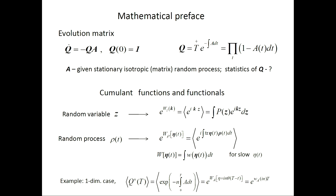In the case that we deal with random processes, we should consider cumulant functionals instead of functions. But if this probe function — the argument of W — changes slowly compared to the correlation time of the process, then the functional can be reduced to a function in such a way. So we can deal with cumulant functions.